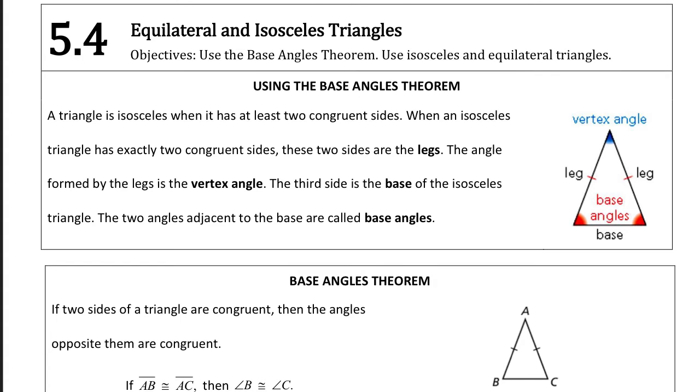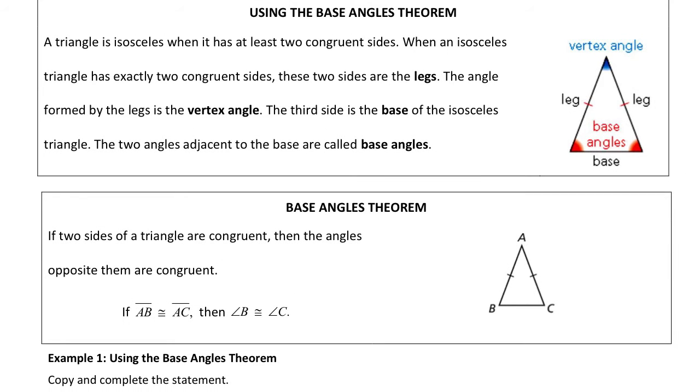Isosceles triangles are triangles where the triangle has at least two congruent sides. When an isosceles triangle has exactly two congruent sides, we call those sides the legs. The congruent sides of an isosceles triangle are called the legs.